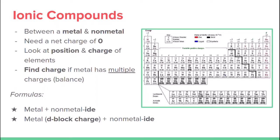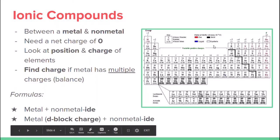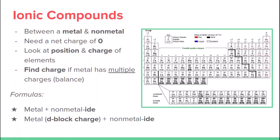Now let's get into naming formulas. For non-d-block metals, it's just going to be the metal name and then the non-metal with its ending changed to -ide. Going back to our sodium and oxygen example, it'll be sodium oxide.